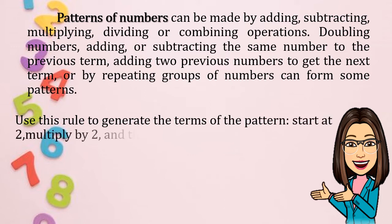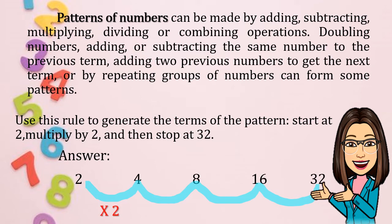Use this rule to generate the terms of the pattern. Start at number two, multiply by two, multiply by two, and then stop at 32. Answer: we have 2, 4, 8, 16, and 32. How were we able to get the next term from the first one? So we have here 2 times 2 is 4, 4 times 2 is 8, 8 times 2 is 16, 16 times 2 is 32.